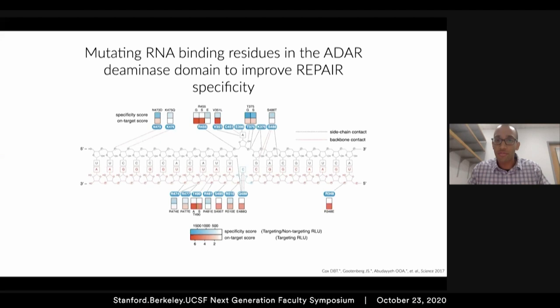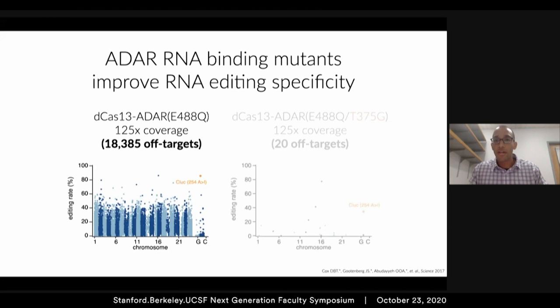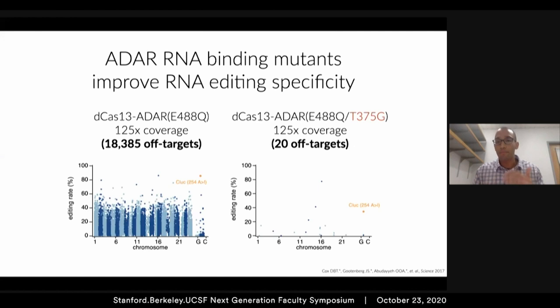When you actually incorporate the T375G mutation, on the left we have our original construct with 18,000 off-targets, and on the right we see what happens with T375G: on-target editing goes from about 85% down to 40%, sacrificing about 50% of on-target efficiency. But in terms of off-targets, you go from 18,000 down to about 20. Proportionally, that's a much greater increase in specificity. And 40% editing of a transcript would be useful in many different therapeutic contexts, so we thought that overall it was a fair trade-off.